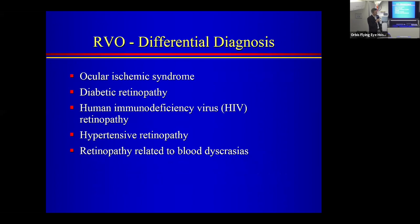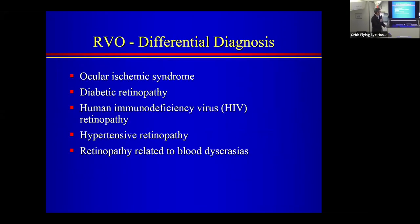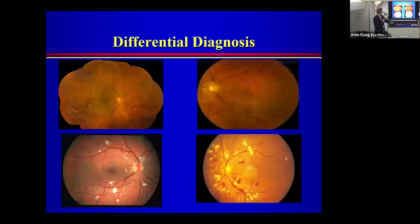Other diagnoses that can mimic retinal vein occlusion include ocular ischemic syndrome, diabetic retinopathy, HIV retinopathy, hypertensive retinopathy, and retinopathy related to blood dyscrasias like severe anemia or leukemia. Here are photographs of these mimics. The top left is ocular ischemic syndrome: the retinal veins are nice and straight, not dilated or tortuous, there's no disc edema, no cotton-wool spots, and hemorrhages tend to be peripheral, large dot-blot rather than flame-shaped.